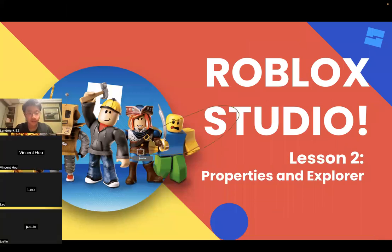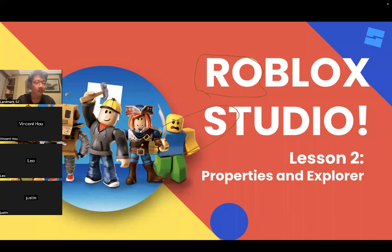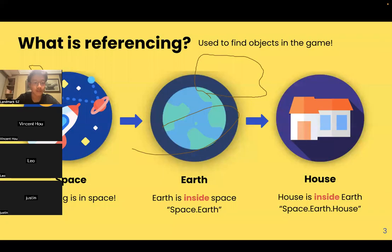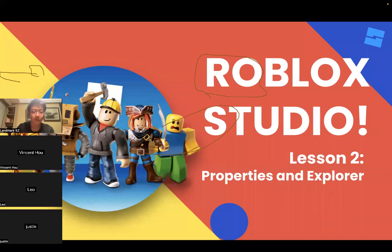Hi guys, welcome to lesson two of our Roblox Studio class. Today we will be building something — we'll be building an obby game. I showed you guys last class what an obby game is: you jump on different blocks to reach a different place. Besides that, we are going to learn about properties and Explorer, which are different parts in Roblox Studio that will help you build your project.